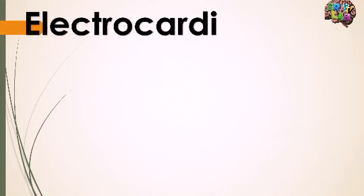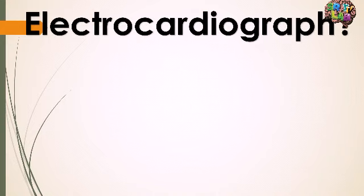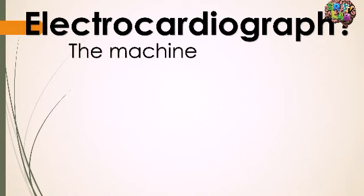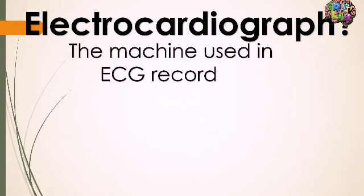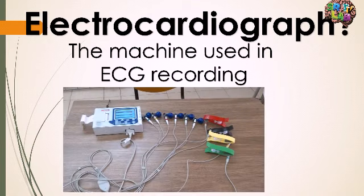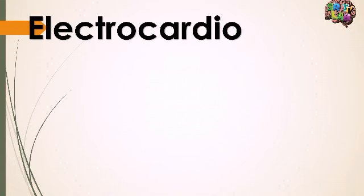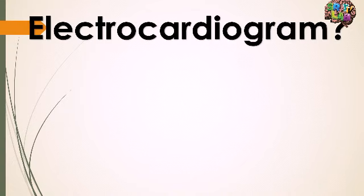The first term is electrocardiograph. Electrocardiograph is the machine used in ECG recording — it is a machine like this one shown here.